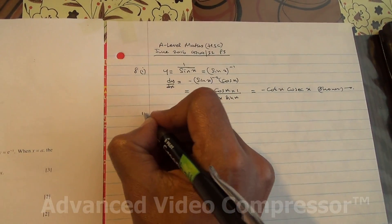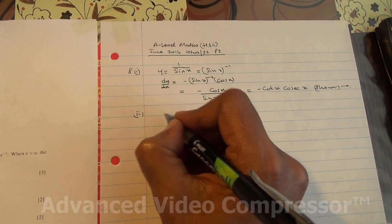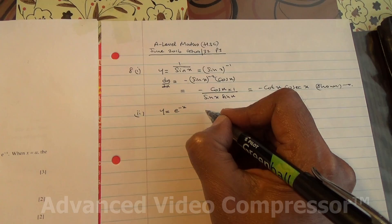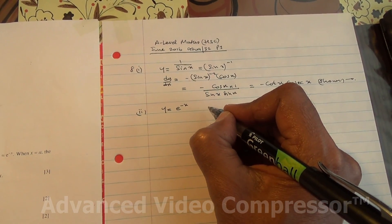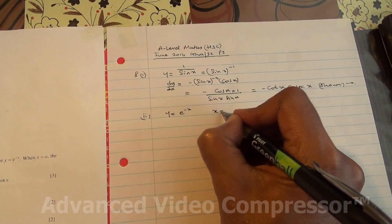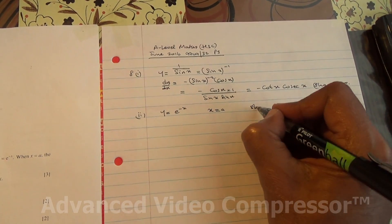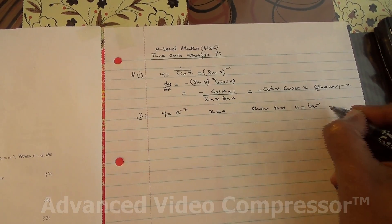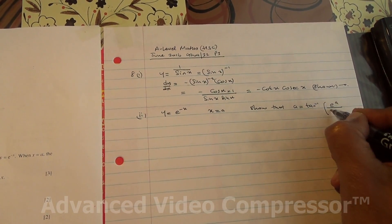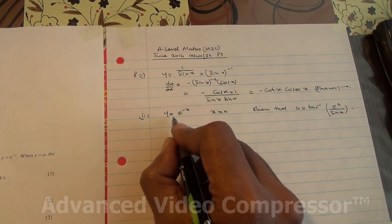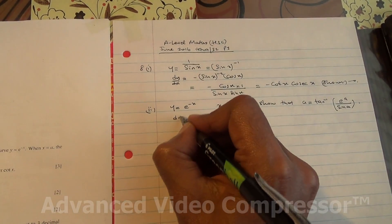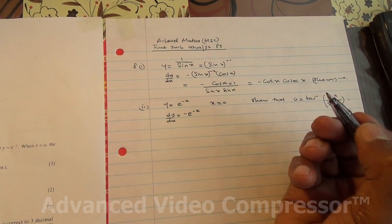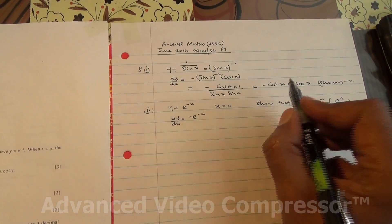For the second part, we need to equate the gradients. We have the curve y equals e to the minus x. In the question, we're told that by equating the gradients to the curves at x equals a, we need to show that a equals arctan of e to the a over sin of a. We're going to differentiate y equals e^(-x), so dy/dx equals negative e to the negative x. This gradient equals that gradient.